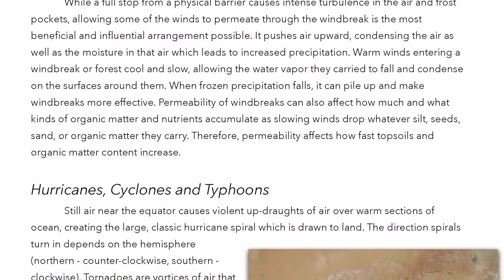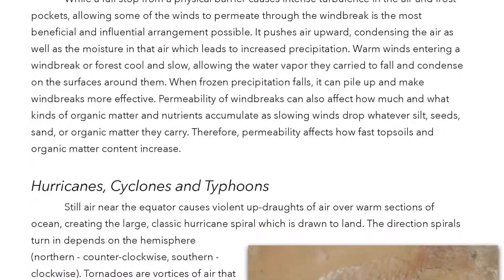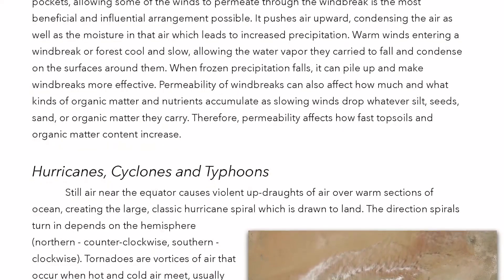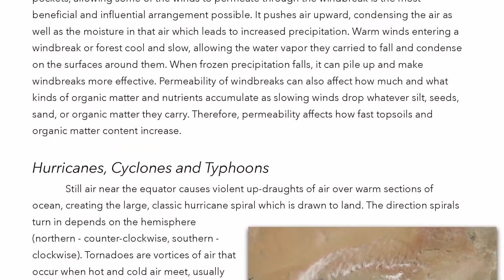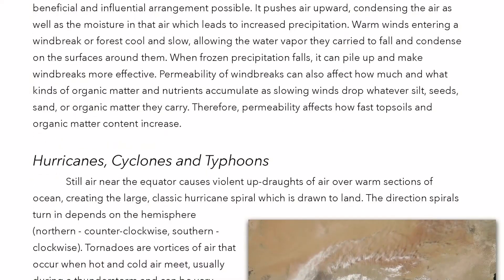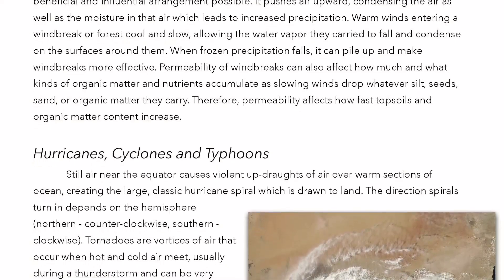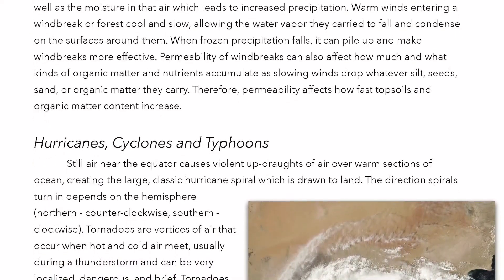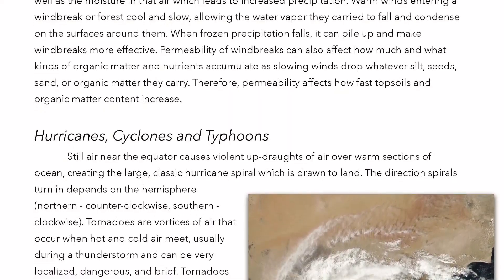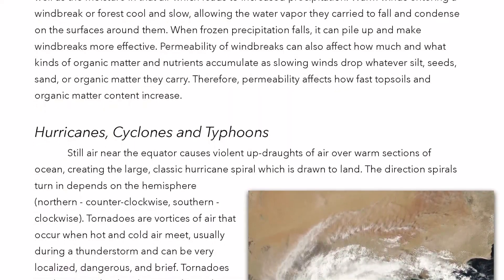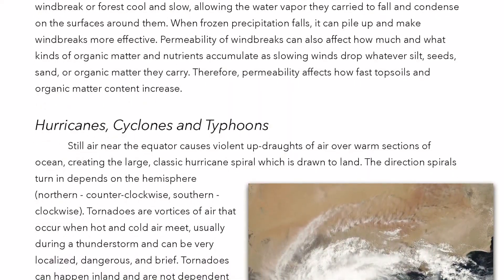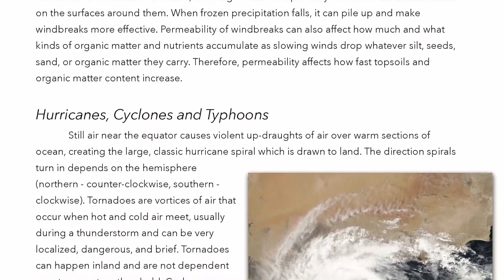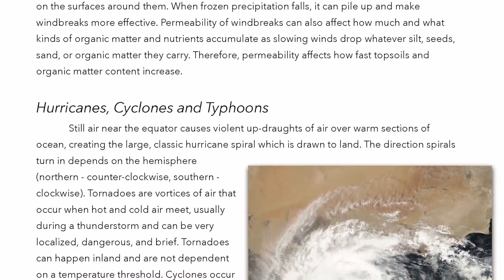When frozen precipitation falls, it can pile up and make windbreaks more effective. Permeability of windbreaks can also affect how much and what kinds of organic matter and nutrients accumulate, as slowing winds drop whatever silt, seeds, sand, or organic matter they carry. Therefore, permeability affects how fast topsoils and organic matter content increase.